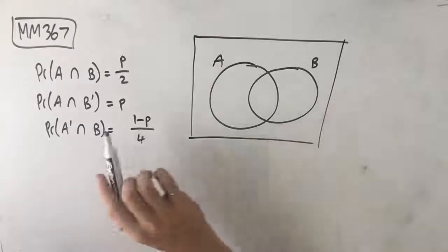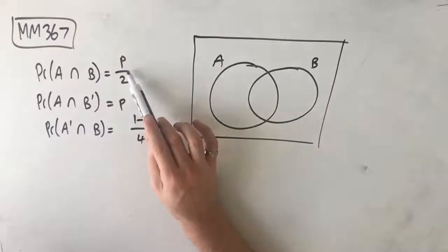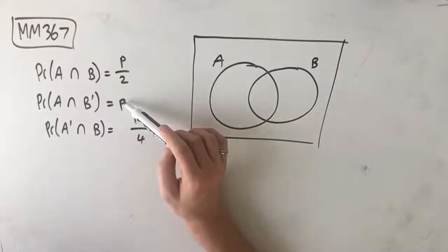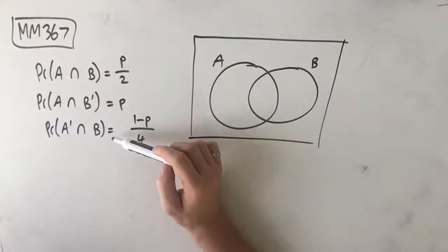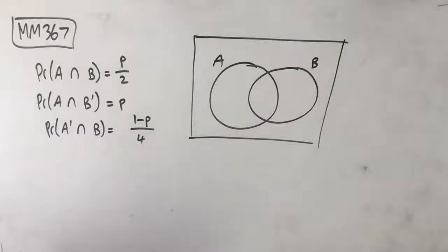In this question, consider two events A and B, where probability of A intersect B is P over 2, probability of A intersect B prime is P, and probability of A prime intersect B is 1 minus P over 4. Let A and B be independent events where P is greater than 0.